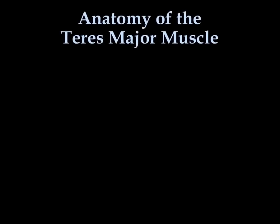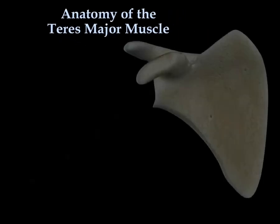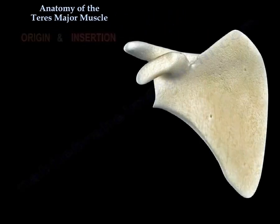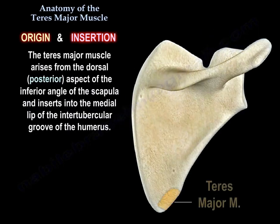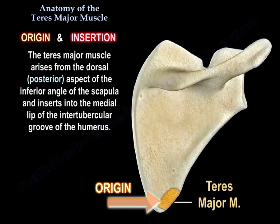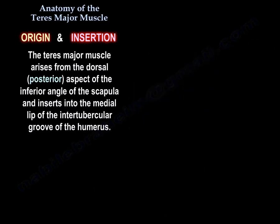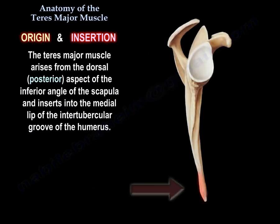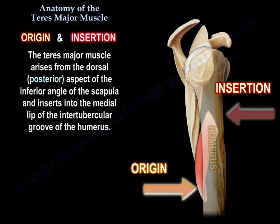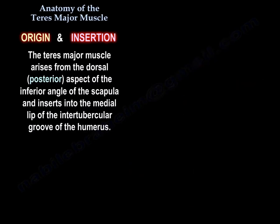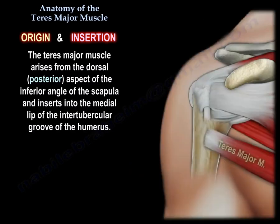Anatomy of the teres major muscle: origin and insertion. The teres major muscle arises from the dorsal posterior aspect of the inferior angle of the scapula and inserts into the medial lip of the intertubercular groove of the humerus.